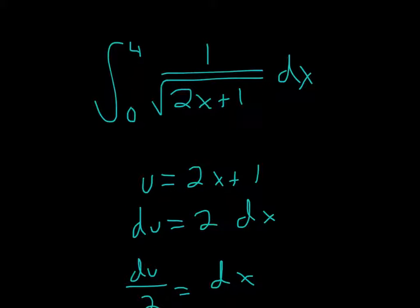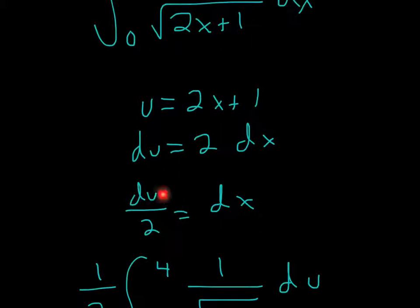let u be the inside of the square root. So u equals 2x plus 1, and du equals 2dx, because the derivative of 2x is 2, and 1 goes away. Is there a 2 here? No. So we're going to divide each side by 2, and it'll be du divided by 2 equals dx.